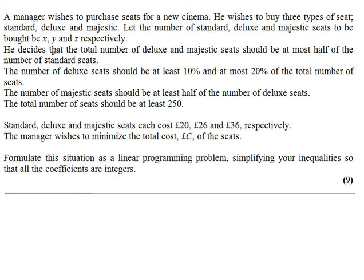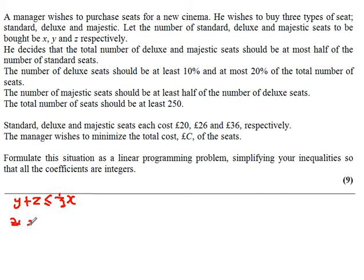We're told the number of standard seats is x, deluxe is y, majestic is z. The total number of deluxe and majestic seats should be at most half the number of standard seats. Multiplying the whole equation by 2 and sorting it out, we end up with x minus 2y minus 2z is greater than or equal to 0.